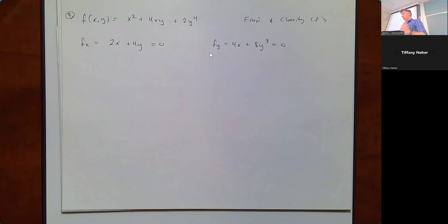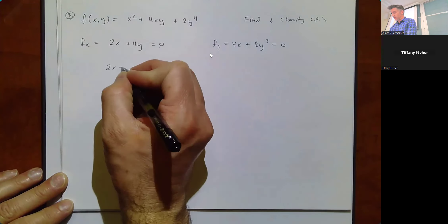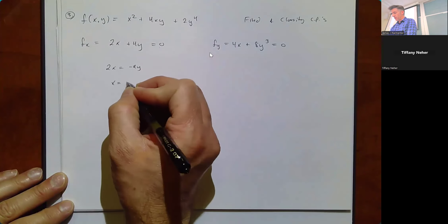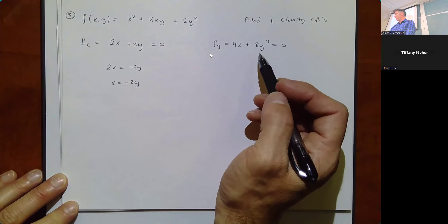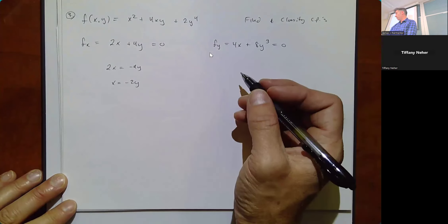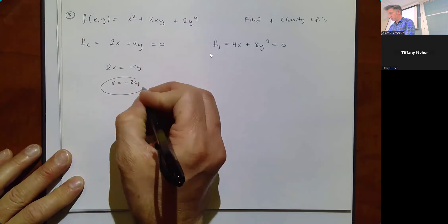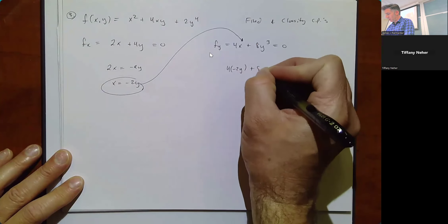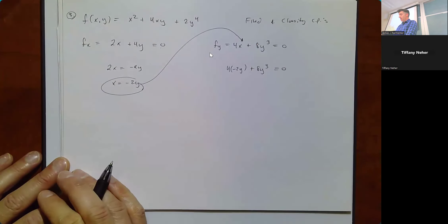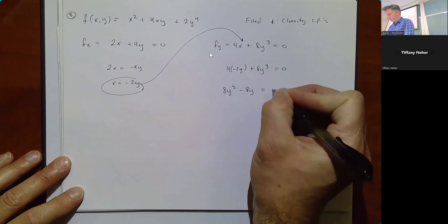To avoid fractions, solve for x in the first equation: 2x = -4y, so x = -2y. Plugging into the second equation: 4(-2y) + 8y³ = 0, giving 8y³ - 8y = 0. Factor out 8y to get 8y(y² - 1) = 0, which further factors as 8y(y - 1)(y + 1) = 0. So y = 0, y = 1, or y = -1.